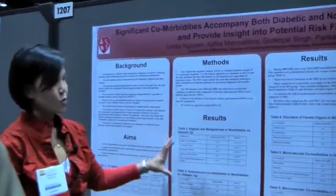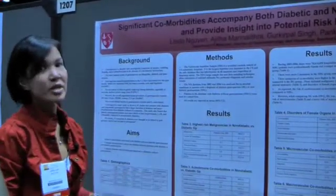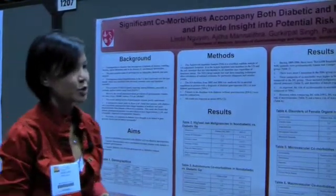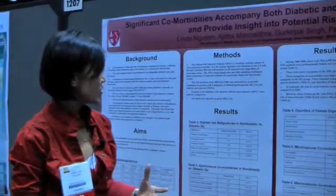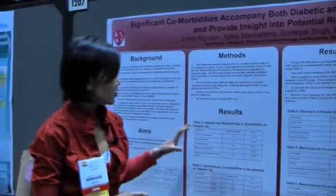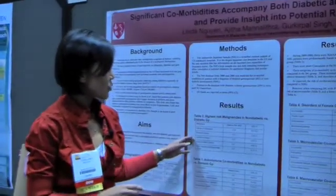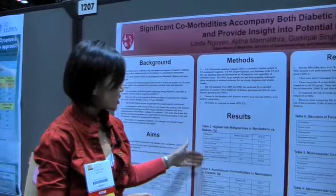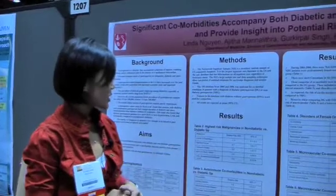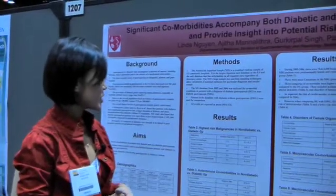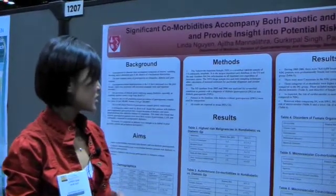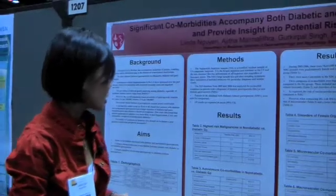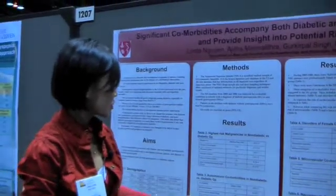What we found in comparing the non-diabetic to the diabetic gastroparesis patients was that there were three categories where non-diabetic gastroparesis had a higher risk of disease. The first category was malignancy, and the top five malignancies were esophagus, stomach, unknown primary, head and neck, and other intra-abdominals.